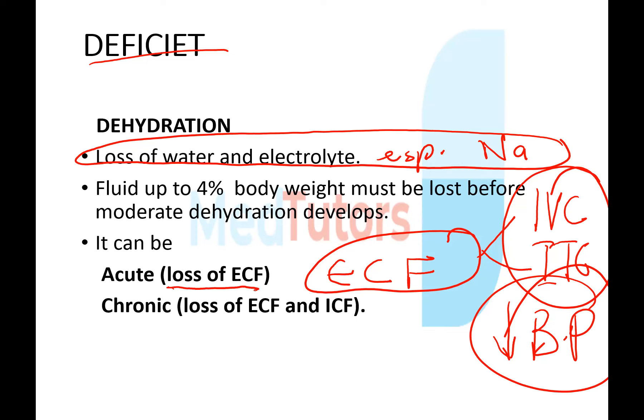Acute dehydration involves sudden loss of ECF and requires rapid replenishment to rebuild the ECF. Chronic dehydration involves gradual loss of both ECF and ICF, and correction must be done gradually — to avoid fluid overload and to avoid central pontine demyelinosis.